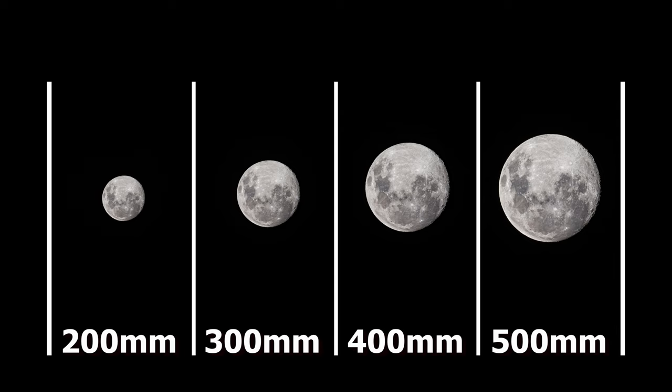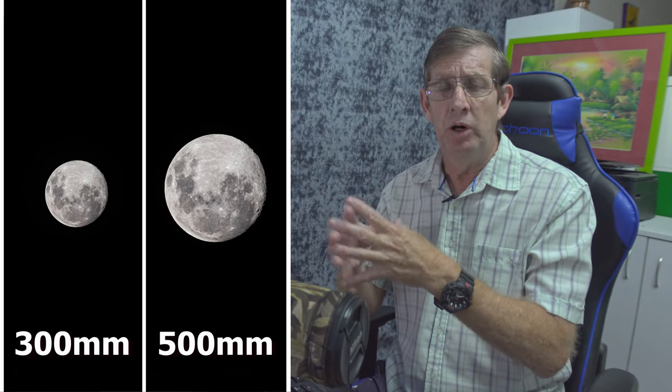I took these images just a week ago with the last full moon using my Nikon D500 and Nikon 200-500mm lens. You can see there's quite a lot of detail, and the more you zoom in the more detail you see — cropping in reveals even more. Between 300 and 500mm will give you very good images; not too many people have a 600mm zoom lens, so that range is the sweet spot.